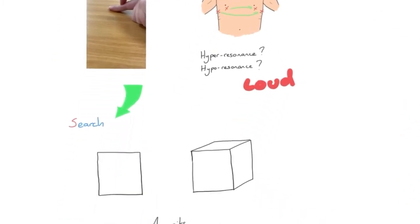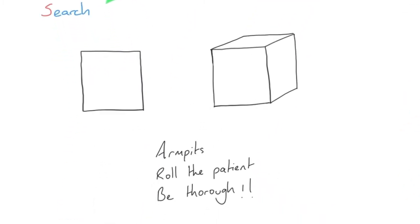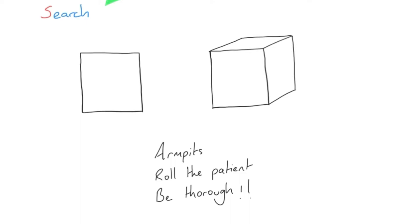At the end of FLAPS is S for Search. Our patients aren't 2D — they're 3D — so we're searching for any injuries we've missed. Remember we're not just looking at the front of the chest; we need to get our hands under the arms, up into the armpits, and where we can, roll the patient to examine the back. Be especially thorough with stab wounds, as skin can fold back and conceal injuries when the patient lowers their arms.